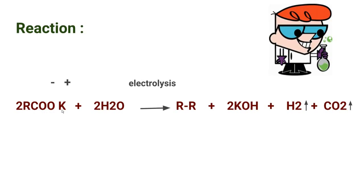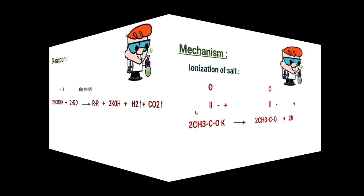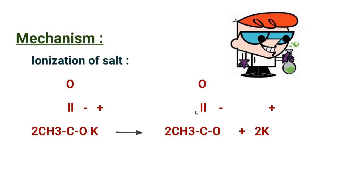In the total reaction of Kolbe's electrolytic method, two molecules of the potassium salt of carboxylic acid and two water molecules undergo electrolysis. The products are an alkane molecule, potassium hydroxide, hydrogen gas, and carbon dioxide gas. The reaction mechanism is a two-stage radical process: electrochemical decarboxylation gives a radical intermediate, and then two such intermediates combine to form a covalent bond.